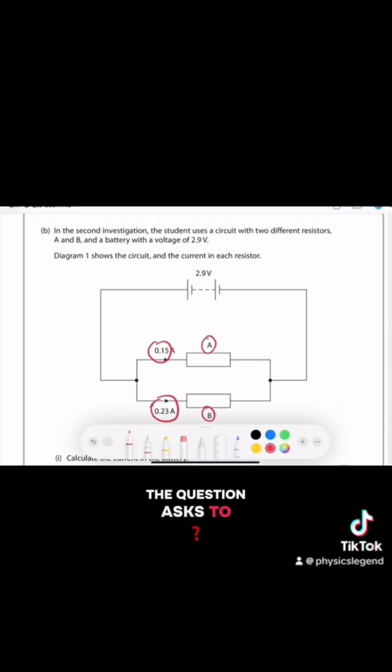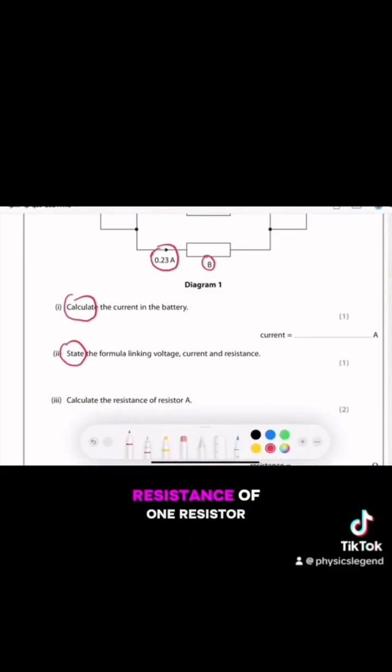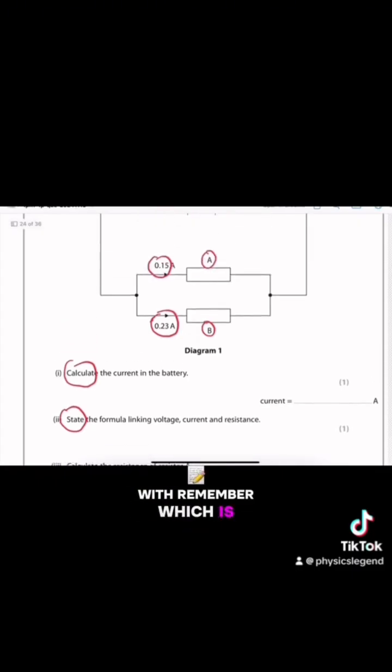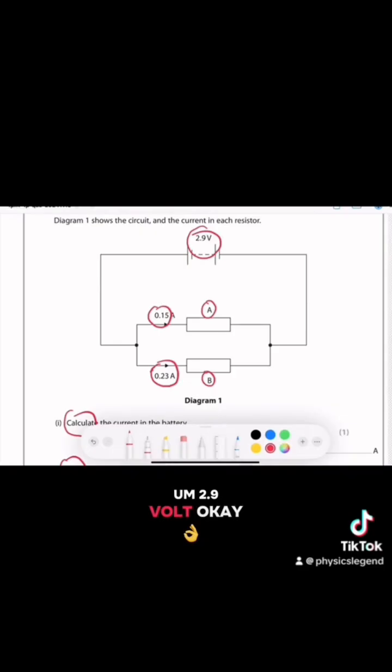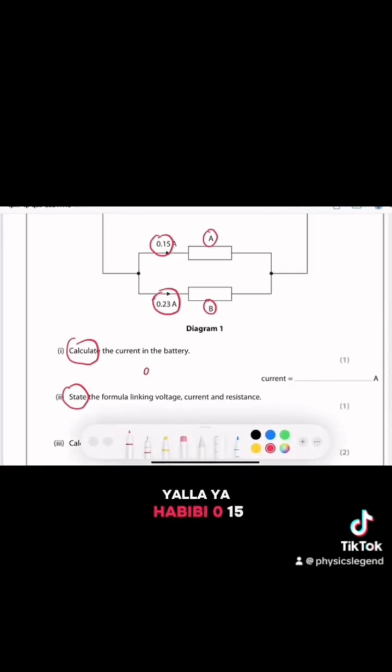The question asks to calculate the total current for I - whatever the command words - and state the formula linking the voltage, current, and resistance. And for the third point, to calculate the resistance of one resistor, which is A, using the total voltage which is 2.9 volts. Okay, part one. Calculate the total current. Command word: calculate. To find the current in the parallel circuit, we add the current in each branch. Yalla habibi, 0.15 plus 0.23, it'll give us 0.38 which is amperes. The examiner gives us the unit, thank you. So we get the first point.